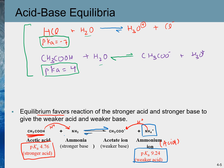Another important thing to remember is that pKa is a logarithmic scale. This means that if one acid has a pKa of 4 and another has a pKa of 5, going from 5 to 4 is a 10-fold increase in acid strength. So the acid strength at pKa 4 is 10 times greater than at pKa 5. Similarly, going from pKa 6 to pKa 4 is a 100-fold increase in acid strength.